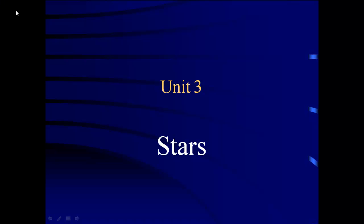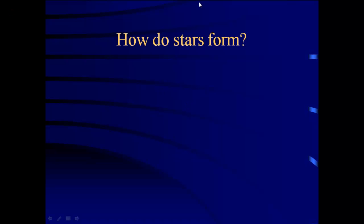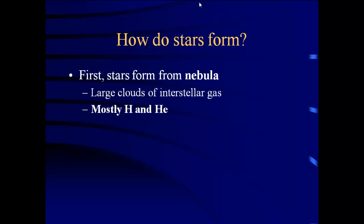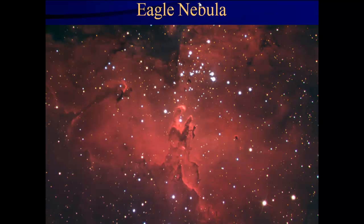First we need to look at some basics and do a quick review. How do stars form? We actually went over this at the end of unit 2 with how planets and solar systems form, so you should know a little bit about this. As a review: it comes from nebulae, which are really big clouds of hydrogen and helium gas. Eventually something causes those to collapse.